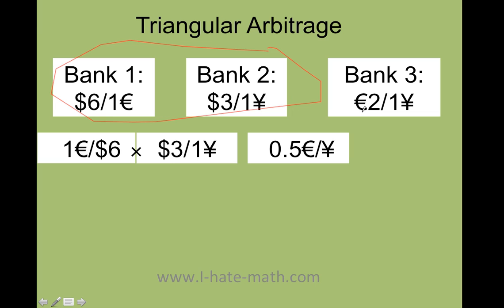Here you have euros on the top and yen on the bottom, so we need to figure out how to do the same with these two rates. Bank one has dollars on the top and euros on the bottom, but I can switch that and make it one over six, then multiply that by three over one. The dollars cancel out when you multiply these two fractions and you get your cross rate, which is 0.5 euros over yen.